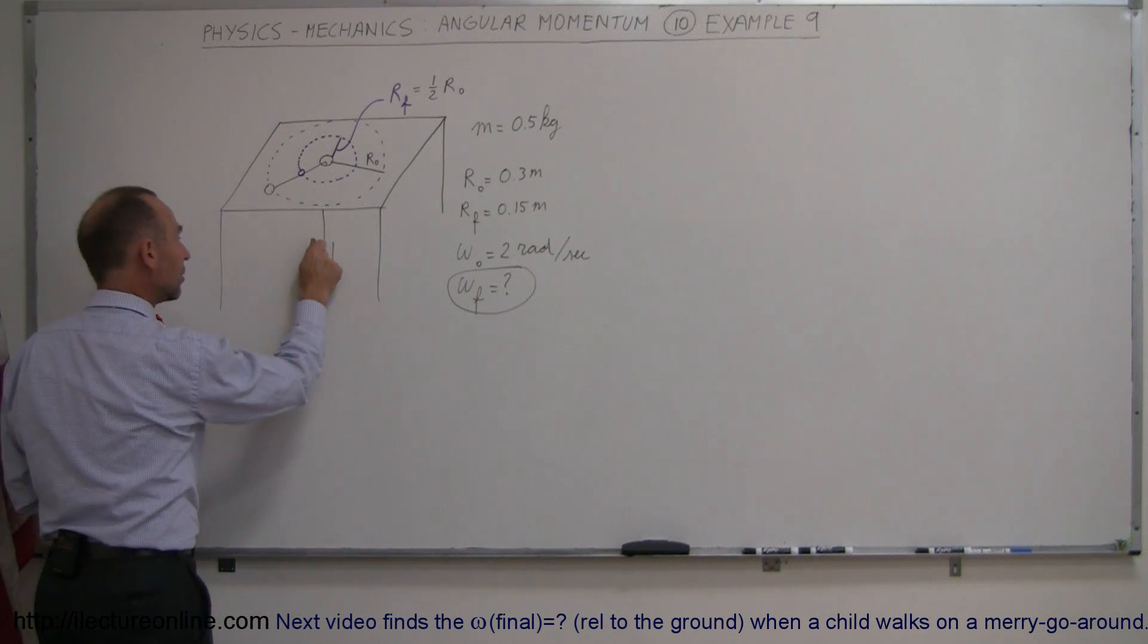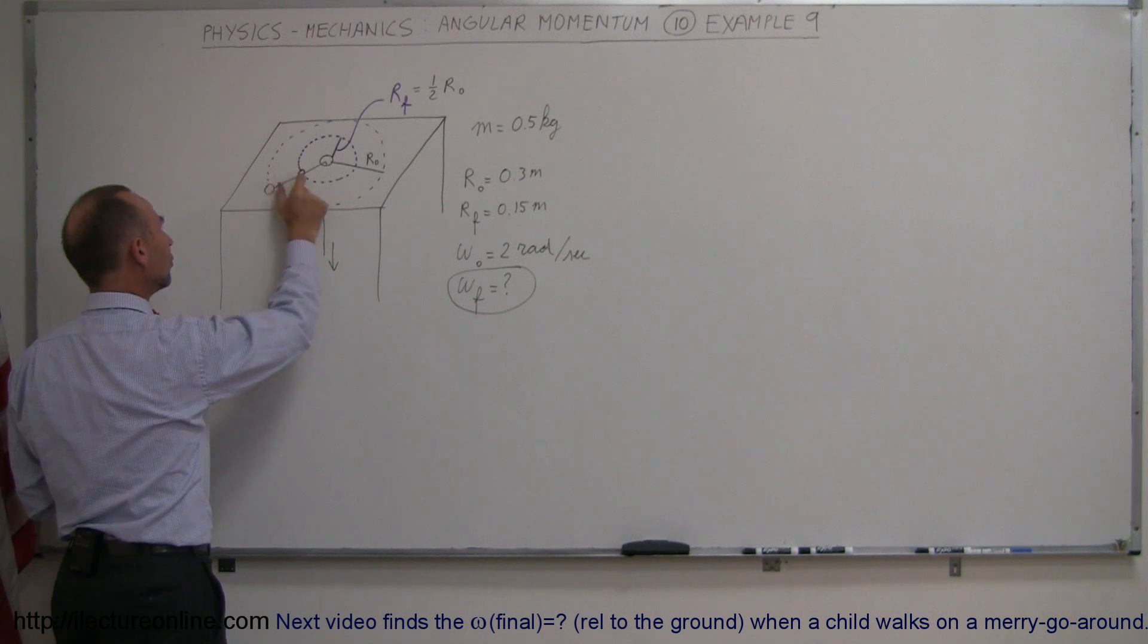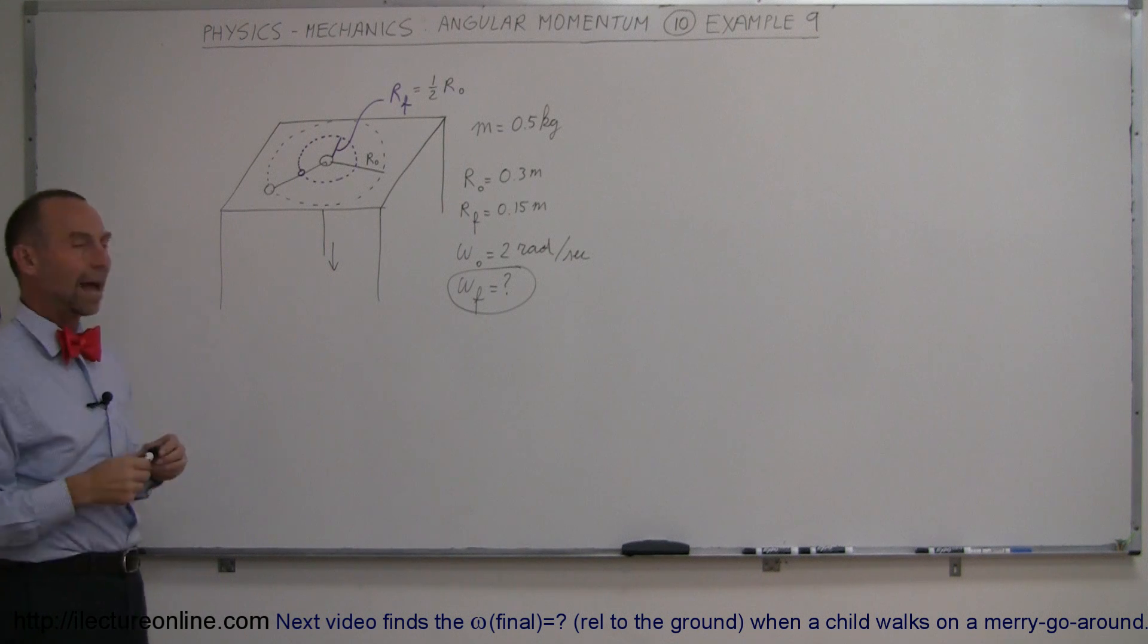Now let's say that you pull on it until the radius has now reduced itself to half the original radius. What do you expect is going to happen?